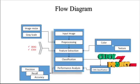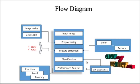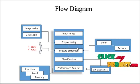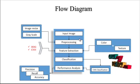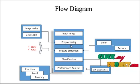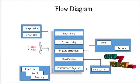Now we are going to discuss about the overall flow diagram of the process. This is the overall working flow. The stages of the project are the modules: input image, preprocessing, feature extraction, classification, and finally performance analysis.